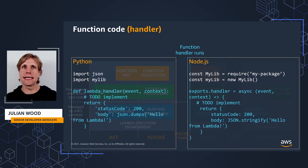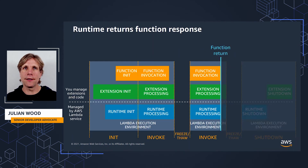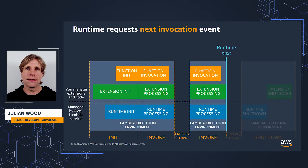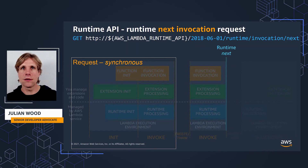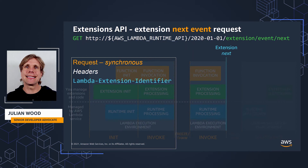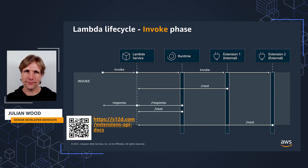Once the handler finishes processing, it then returns its value, which is received by the runtime again. The runtime uses the runtime API to post this function response back to Lambda. Then the runtime is finished sending the function results — it requests the next event while the extension can carry on doing some more work. The extension continues sending out its telemetry data about this invoke or whatever it needs to do. When it's finished, it sends its next API request to receive the next event. And another function invoke phase is complete.